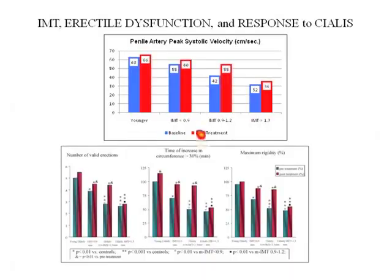That makes sense because increased IMT correlates with obstructive disease elsewhere. In response to three months of Cialis evaluated one month later: the younger men with psychogenic ED had normal blood flow to begin with and it stayed normal. The older men with organic ED who had preserved IMT saw blood flow improve basically to normal. The men with mild increase in IMT improved, but not quite to normal. The men with a heavily thickened IMT saw no improvement in blood flow.